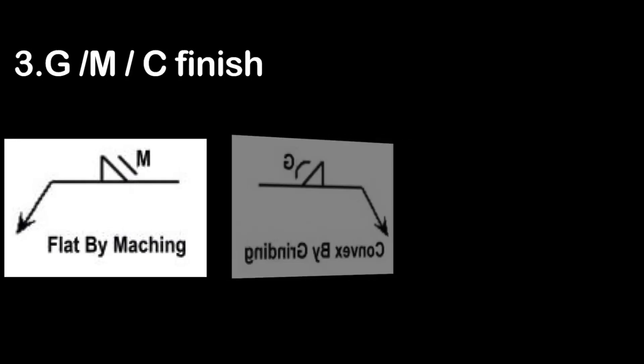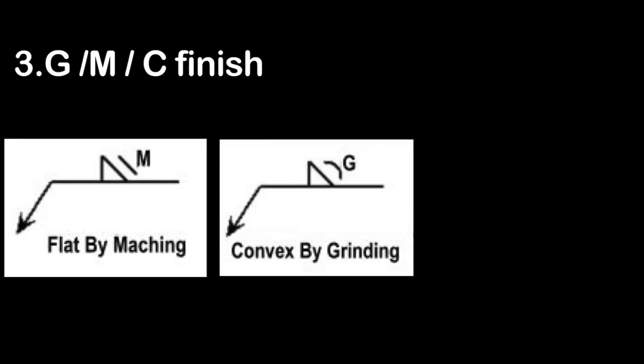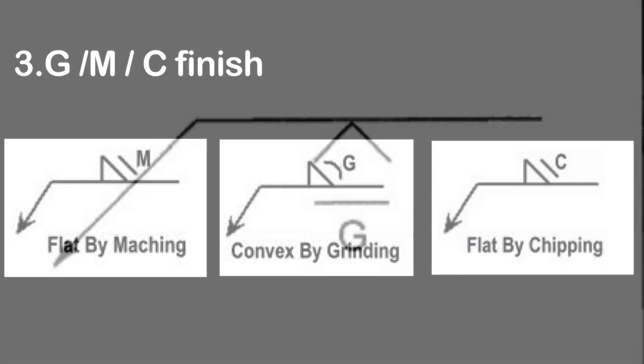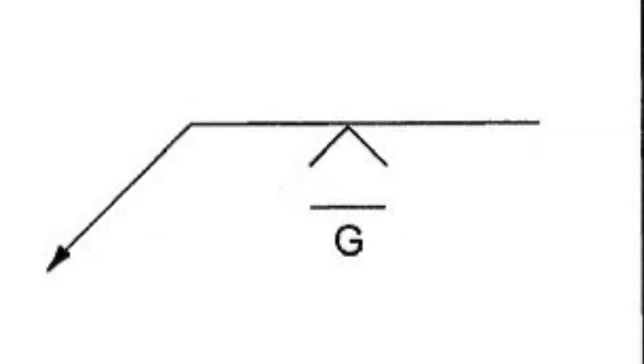The third one is GMC finish. Here M means machining, G means grinding, C means chipping. The final contour will be achieved by means of these operations.